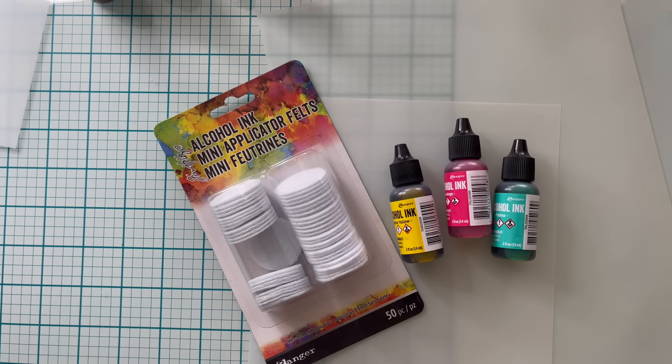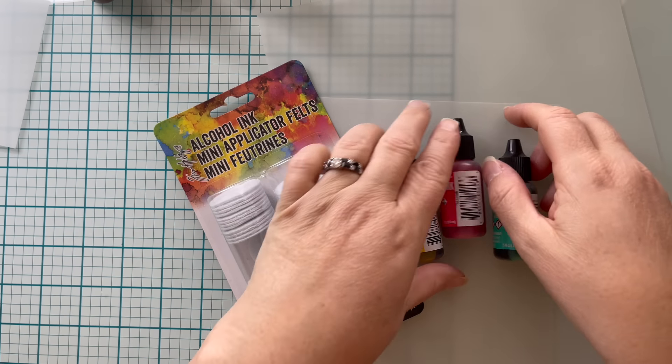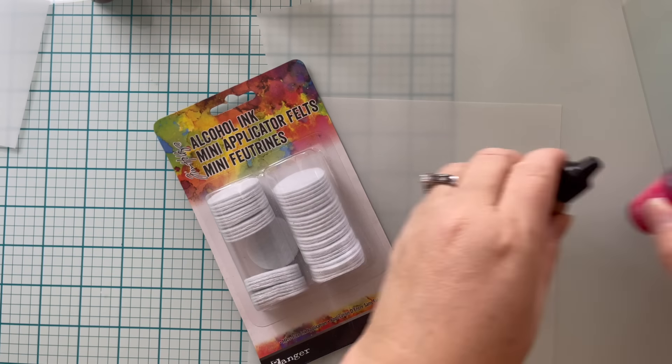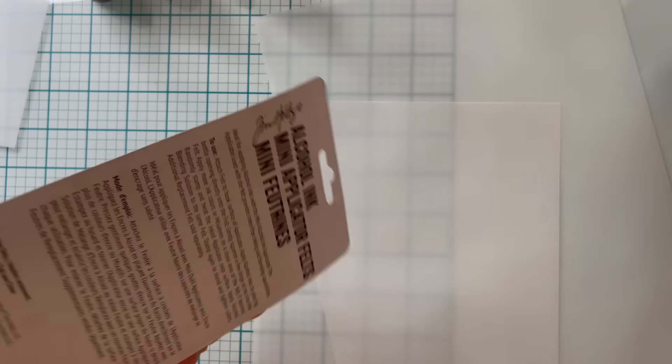My first order of business was to get some color on my vellum, and quite honestly, I wasn't sure if it was going to work. I broke out the alcohol inks because they're in my stash, I don't use them very often, and I figured they dried quickly, so maybe they wouldn't warp my vellum so much.